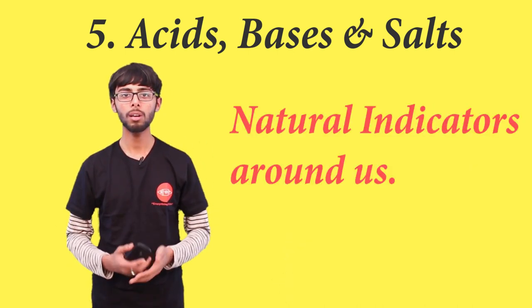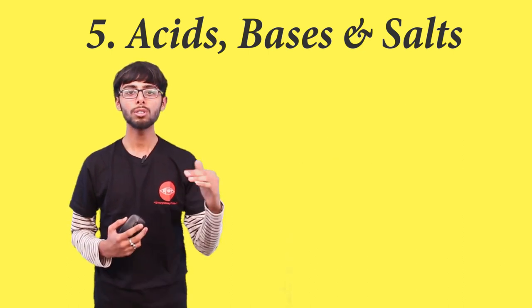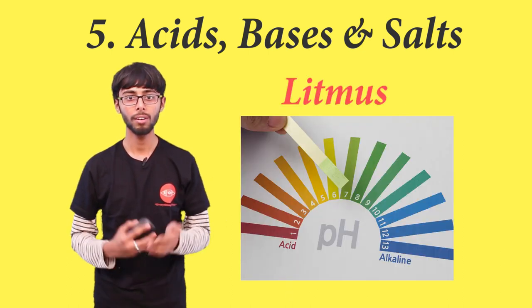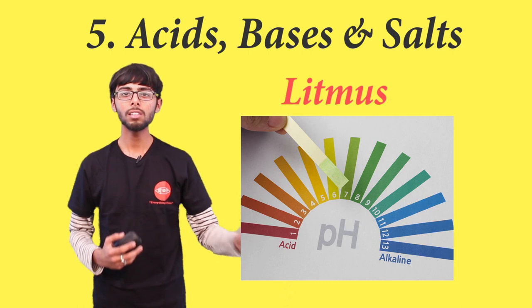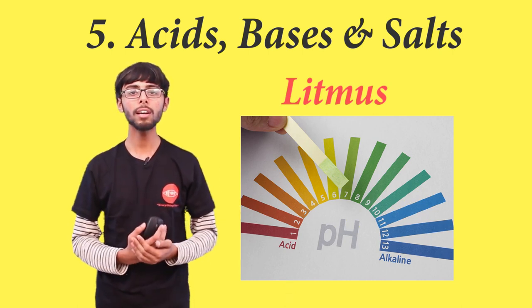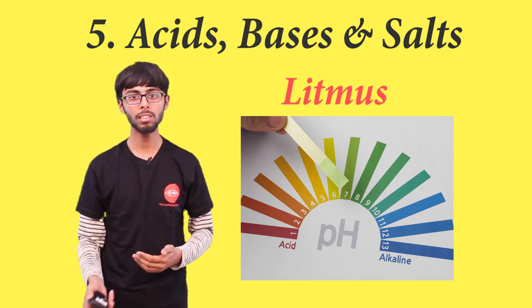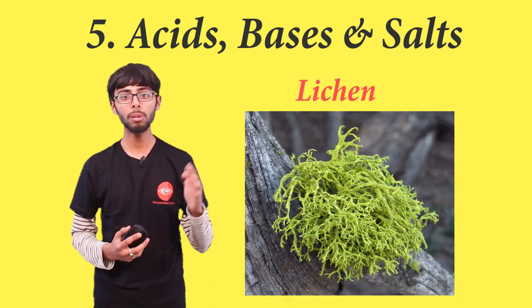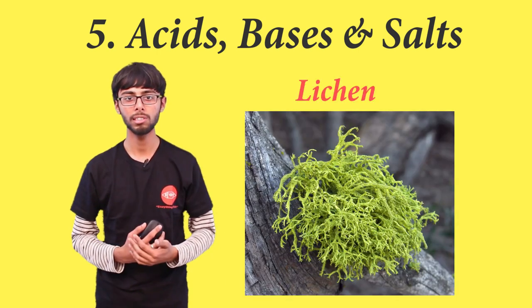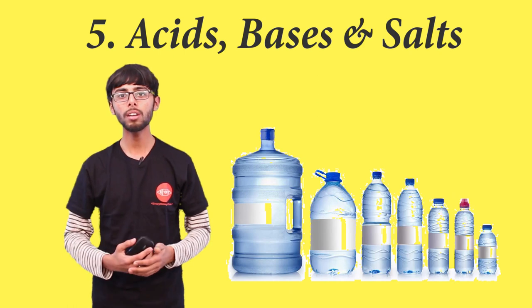So comes our next topic: natural indicators around us. First comes litmus, a natural dye (d-y-e). This litmus is the most commonly used indicator to test the acidity or basicity of a substance. It is extracted from lichens. Basically, we add distilled water to it.